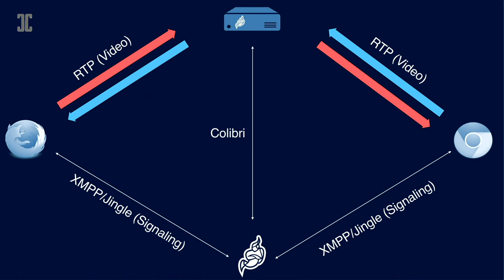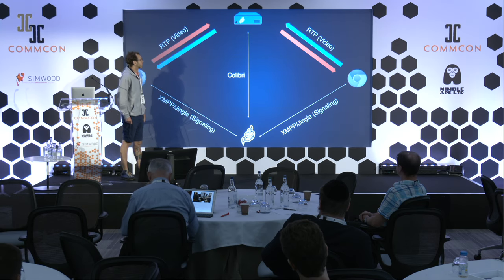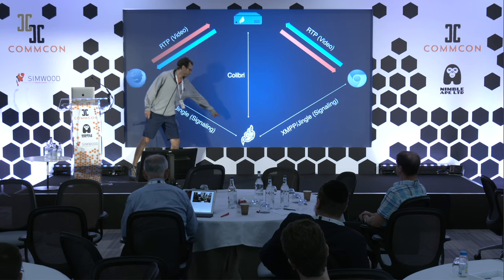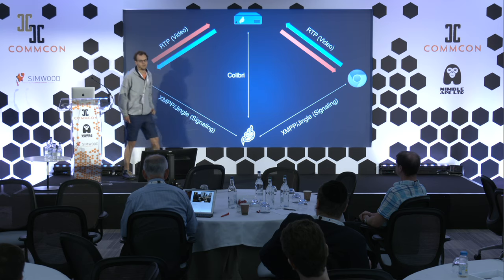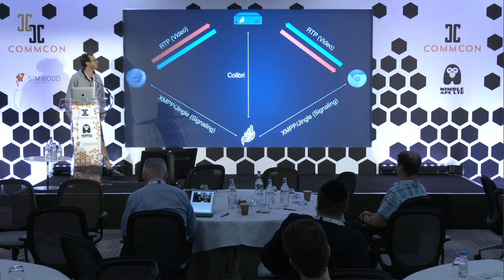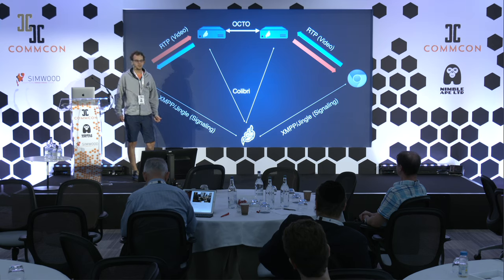We decided to implement this in Jitsi. In our case, we had an advantage because from the start, our signaling server and our SFU were separate entities. We have two clients on the left and right. Initially, they connect to a signaling server called Jikofo, which manages the conference. Jikofo selects which SFU to use, and then the clients connect there for media. If the round-trip time to the signaling server is long, that is not as bad as long as the media connection is good. All we needed to do was make the signaling server aware of multiple SFUs and interconnect the SFUs.